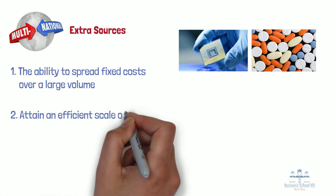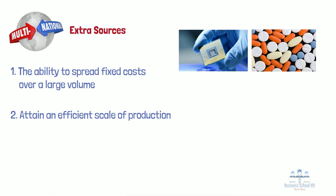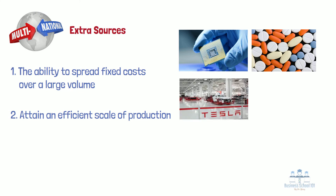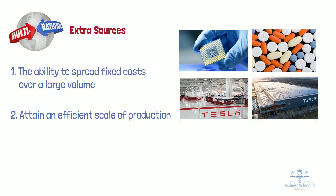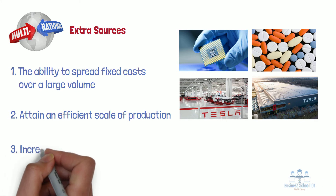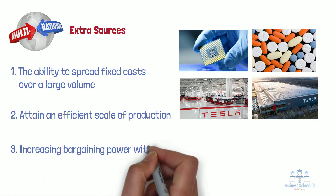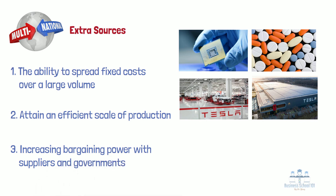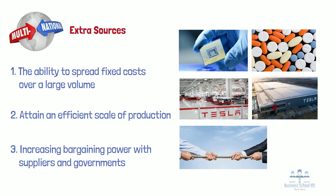Second, a firm may not be able to attain an efficient scale of production unless it serves global markets. In the automobile industry, for example, an efficiently scaled factory is one designed to produce about 500,000 units a year. Automobile firms would prefer to produce a single model from each factory, since this eliminates costs associated with switching production from one model to another. If domestic demand for a particular model is only 100,000 units a year, the inability to attain a 500,000 unit output will drive up average unit costs. Finally, as global sales increase the size of an enterprise, so too does its bargaining power with suppliers and governments, which may allow it to attain economies of scale in purchasing and financing, bargaining down the cost of key inputs and boosting profitability.